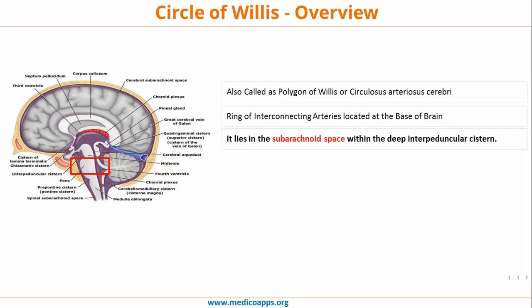As you can see in the diagram, this is a very important MCQ which has been asked often — the Circle of Willis lies in the subarachnoid space within the deep interpeduncular cistern. Several important structures are present around this point: the optic chiasm, infundibulum of the pituitary stalk, and hypothalamus — all three critical structures where the Circle of Willis is present.